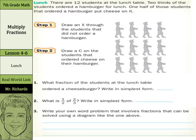A real-world link talks about lunch, one of my favorite subjects. There are 12 students at the lunch table. Two-thirds of the students ordered a hamburger for lunch. One-half of those students that ordered a hamburger put cheese on it. In step one, draw an X through the students that did not order a hamburger.